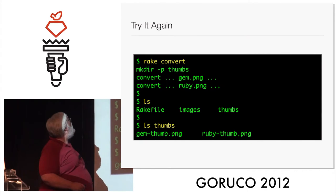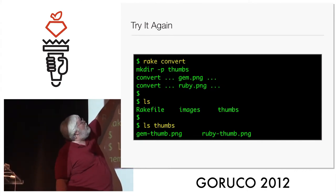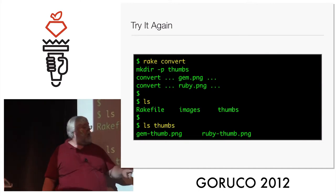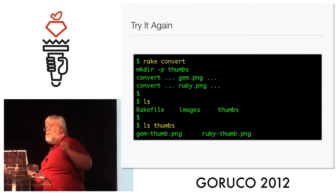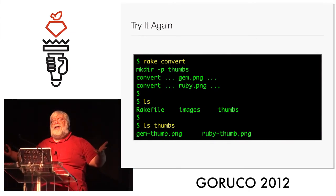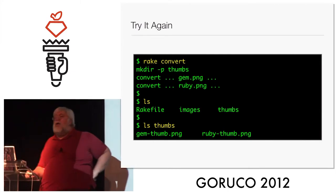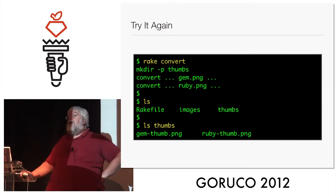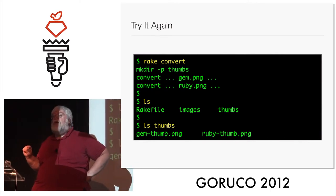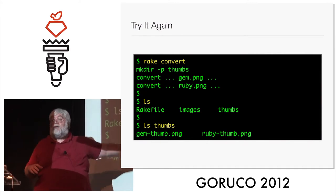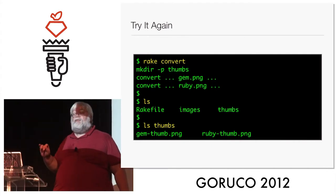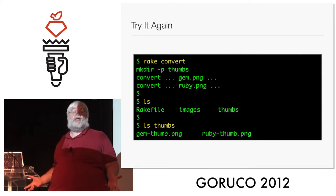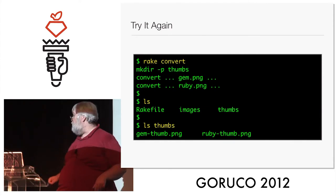Once we do that and run it, look what we get. Rake convert builds the thumbs directory, then runs convert on both of those images. If we do an `ls` we see we now have a thumbs directory, and inside thumbs we have 'gem-thumb.png' and 'ruby-thumb.png' — both files were converted. Notice we've taken a complex task of walking through a large directory of images and have a way of rebuilding the thumbnails, but we only rebuild the thumbnails that are needed. If I had 100 files and I changed one of the source images, it would grab the one that changed and rebuild its thumbnail but not rebuild all the other 99. So Rake is smart about doing the minimal amount of work possible.